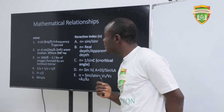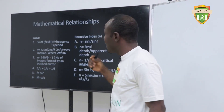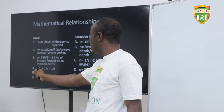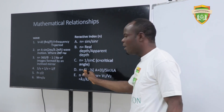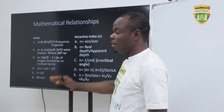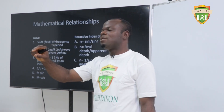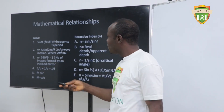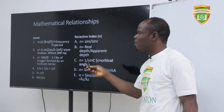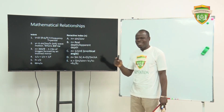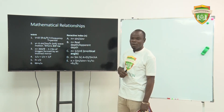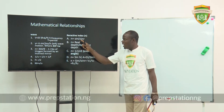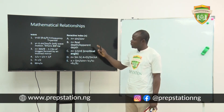Now we are going to have a good grip at our mathematical expressions. The first formula is V = λf, that is wavelength multiplied by the frequency. Also, frequency is the inverse of the period: F = 1/T. These are key formulas to always have at hand.